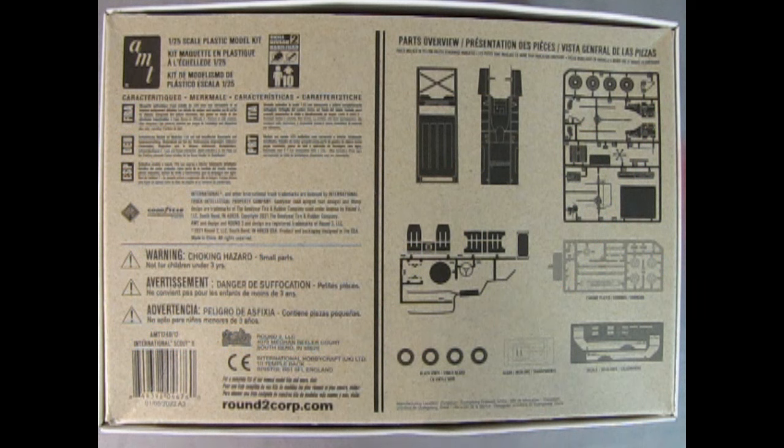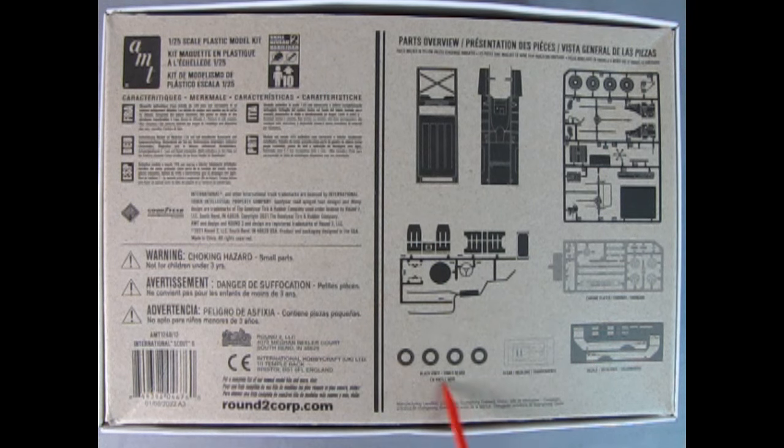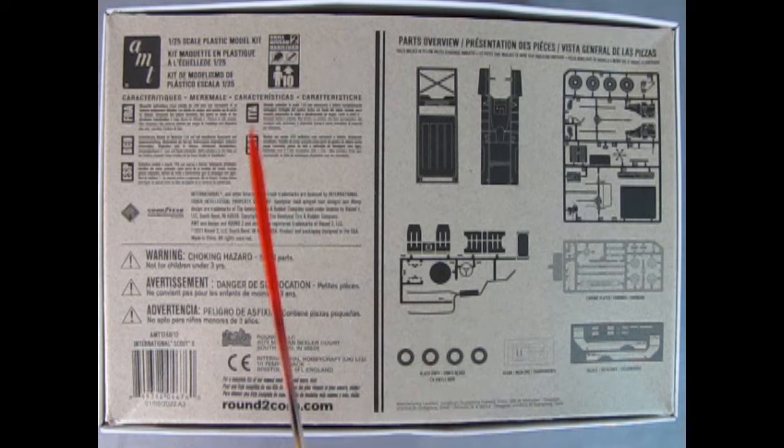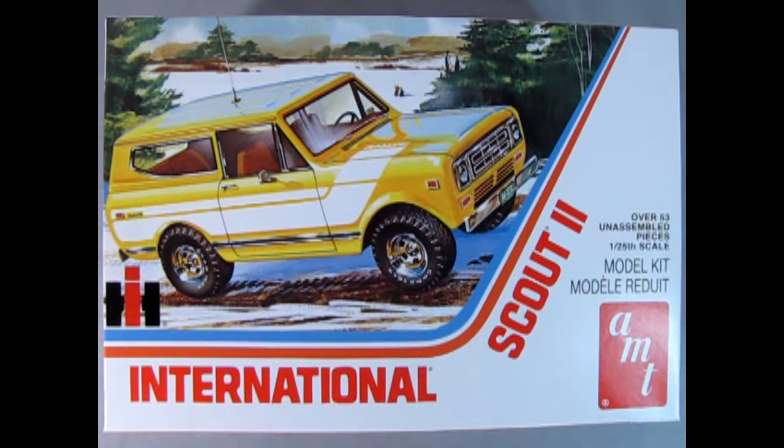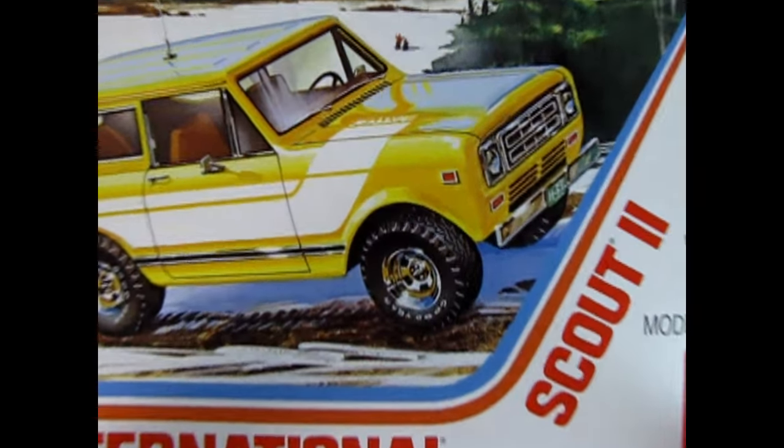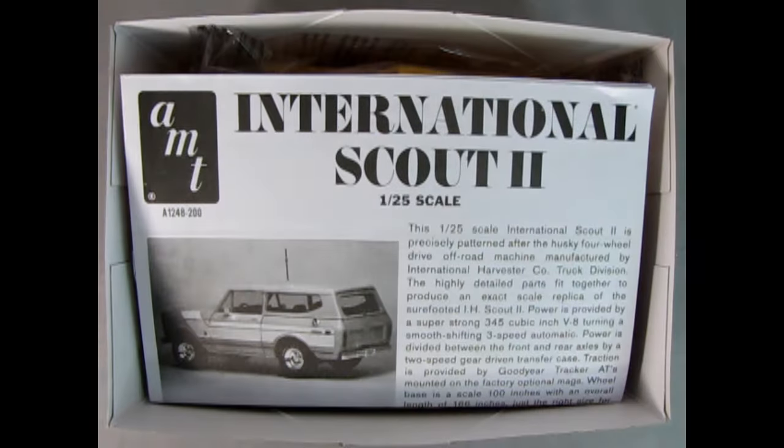On the bottom of the box, we have these silhouettes of all the parts, as well as the decal sheet, the clear and the chrome, and the tires. This is for skill level two, for ages 10 and up. You will need glue and paint to build this model. Now let's take the lid off our International Scout 2 and see what we got.